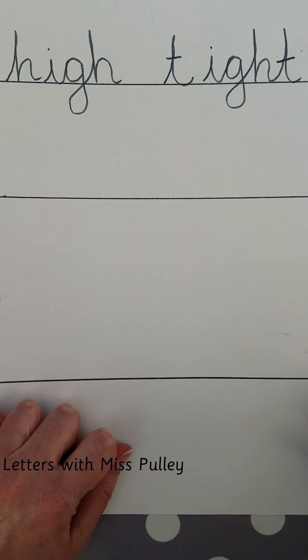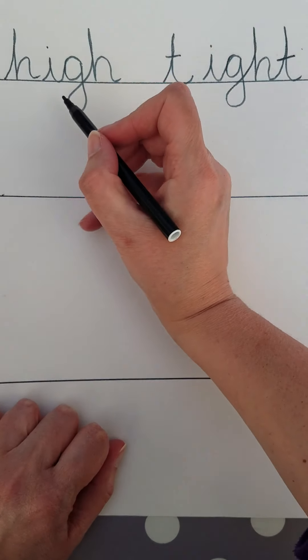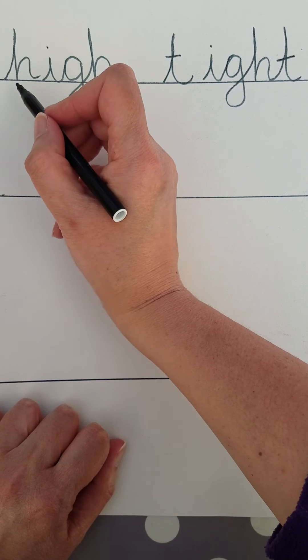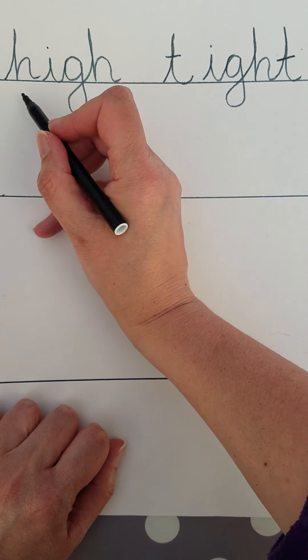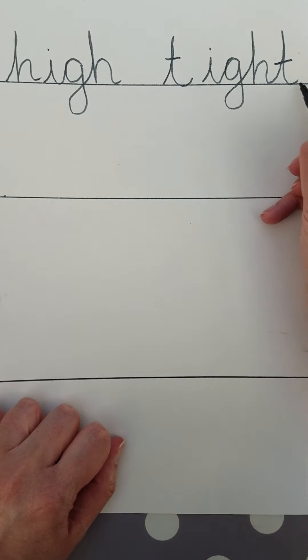So this sound is I, and the I sound in the middle of the word is made up of the letters I, G, H. Like here it says high: h, I, g, h. And here it says tight: t, i, g, h, t.